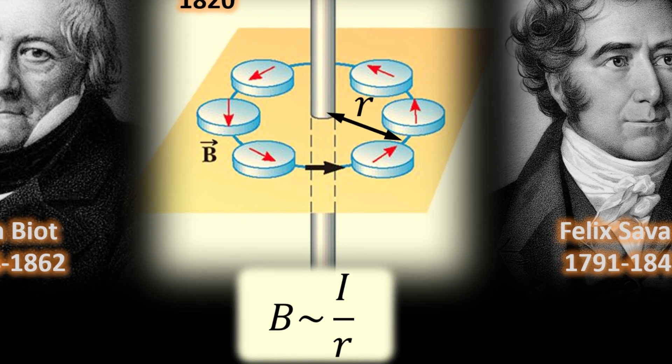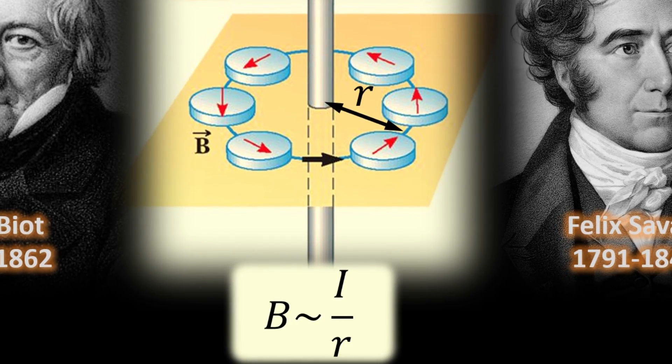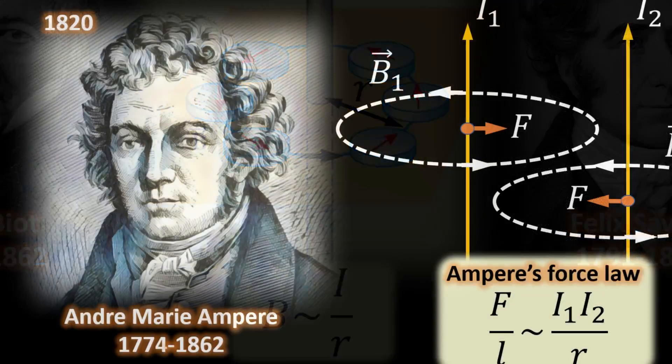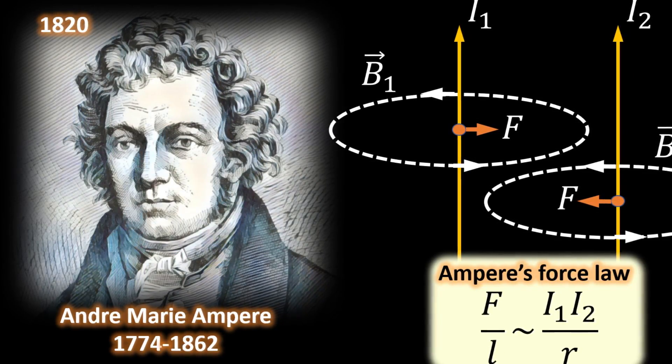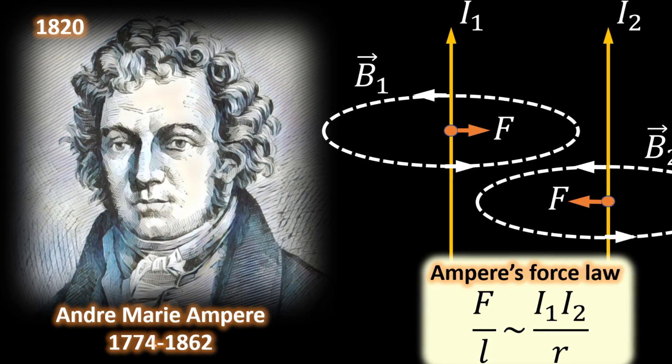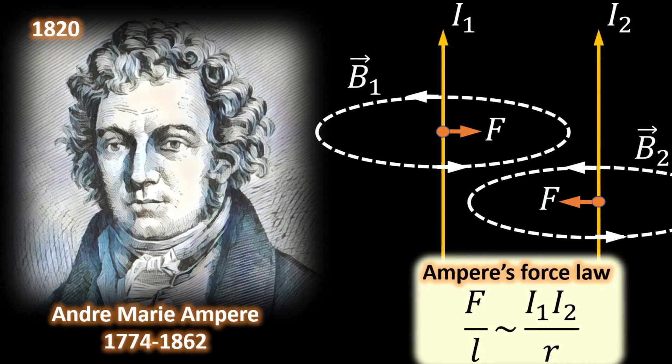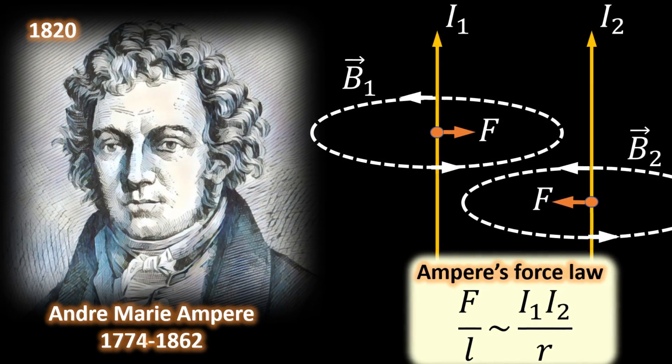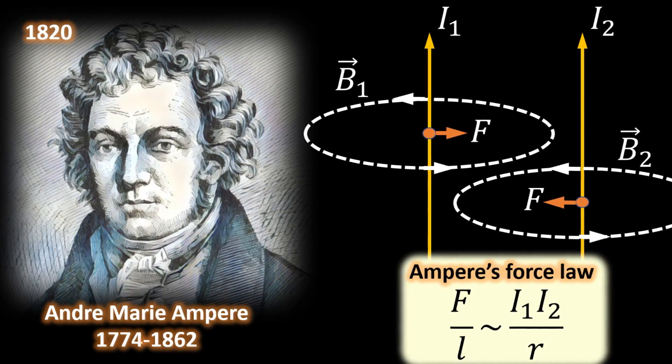This represented the first quantitative measurements of the Ørsted effect. Then entered André-Marie Ampère, a French physicist and mathematician, also in 1820. His first inclination was to investigate if two current-carrying wires exert a force on each other. To his delight, the wires indeed attract when current flows in the same direction and repel when they flow in the opposite direction.